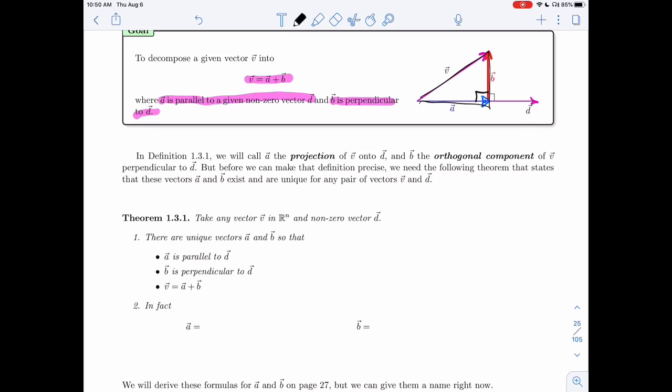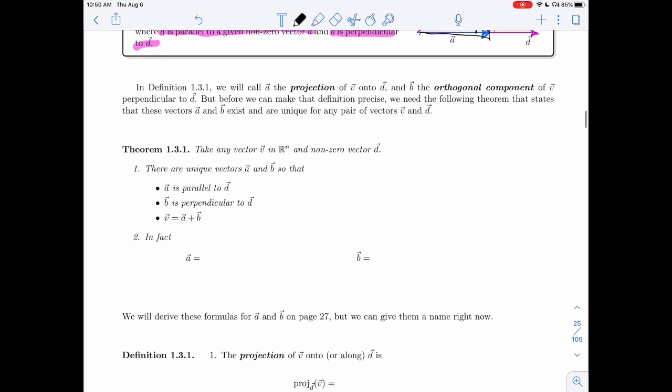The reason we don't do it right now is that we need to make sure that if I give you V and D, everybody in the class will find the same A and the same B. So we could actually give them names like projection and orthogonal component. So that's what we'll show in theorem 1.3.1.